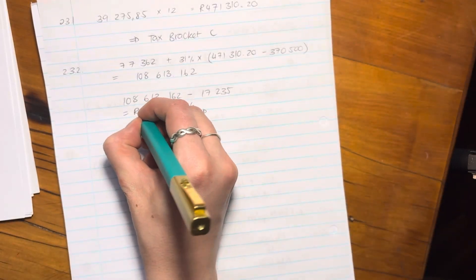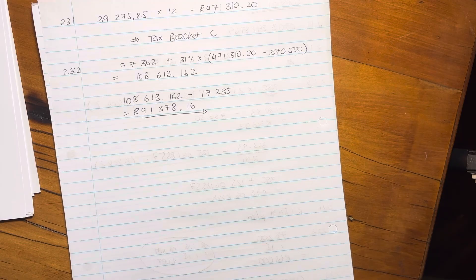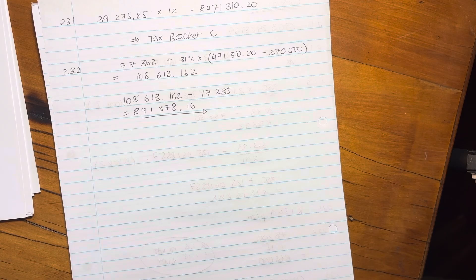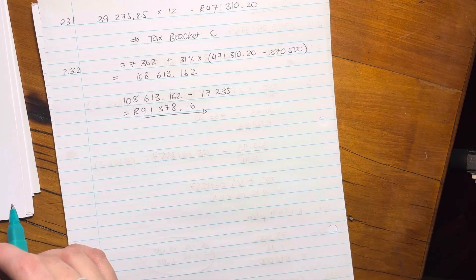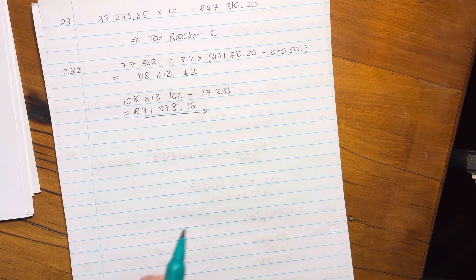But that's our final answer there. The only thing we've forgotten is to put a rand value in. After we put the rand value in, we are ready to go. And that is how much tax she pays in a year. Or in the 2023-2024 tax year. Hope that makes sense. Let's move on to question 3.